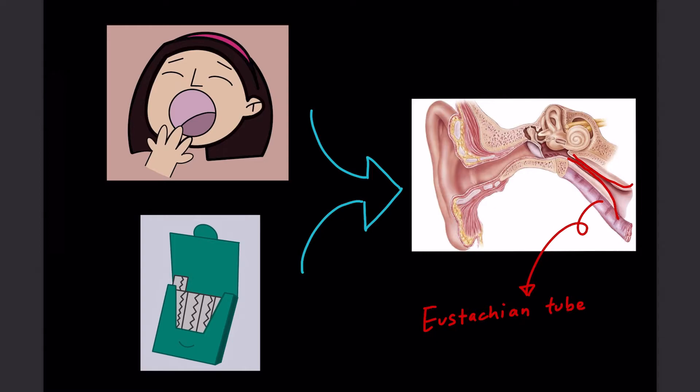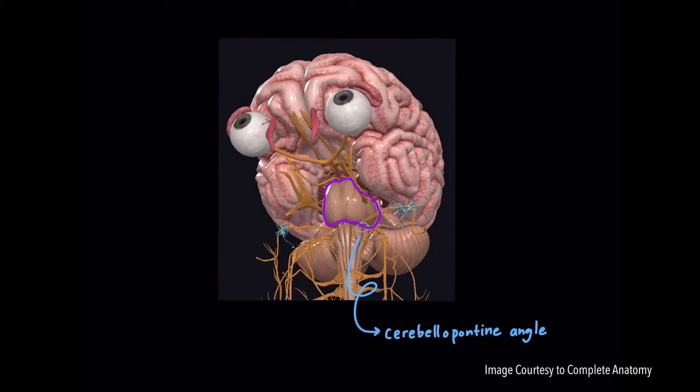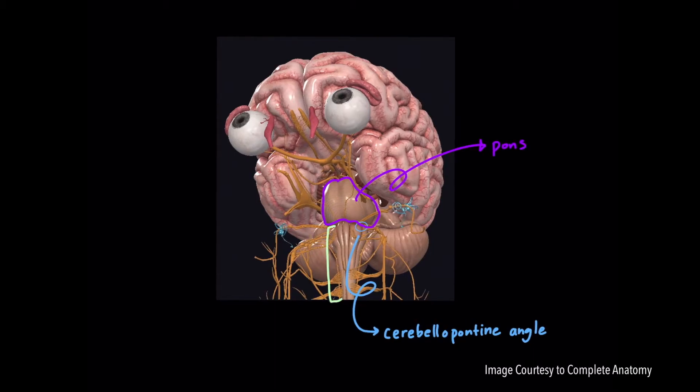This helps equalize pressure on either side of the eardrum. The area where the vestibulocochlear nerve enters the brainstem is called the cerebellopontine angle, the lateral part of the junction between the pons and medulla. This is also known as the pontomedullary junction.